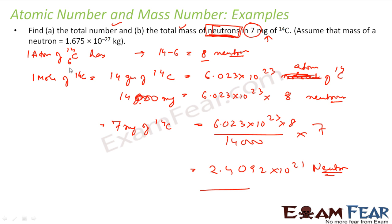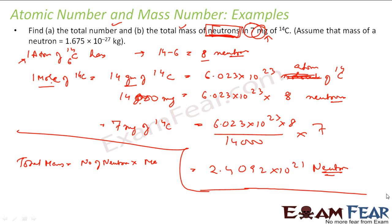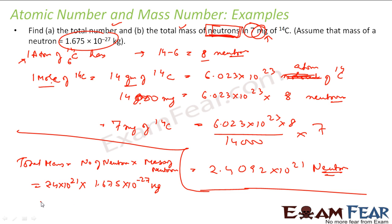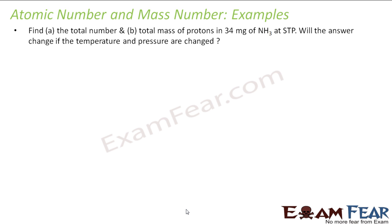The logic is: first find neutrons in one atom, then use the mole-to-grams relation to find the count for your given mass. For total mass of neutrons: total mass = number of neutrons × mass of one neutron = 2.4×10²¹ × 1.675×10⁻²⁷ kg = 4.03×10⁻⁶ kg.